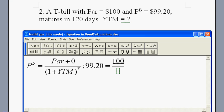So, the par is 100. I have a plus zero here. That is because it's a T-bill. It's not paying any coupon. It's a so-called zero coupon bond. And then, here is my one plus the yield to maturity.